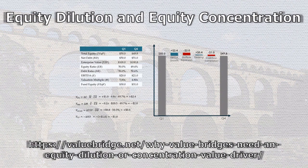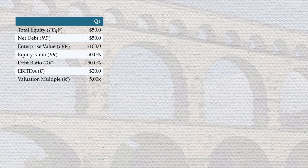The following table provides capital structure and income statement data for a private equity deal. It is a $100 million company with $50 of debt and $50 of equity. As of Q1, the company has TTM EBITDA of 20, so its valuation multiple is 100 over 20, or 5.0.